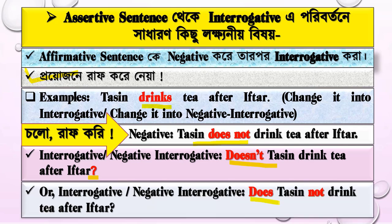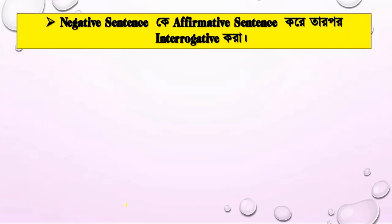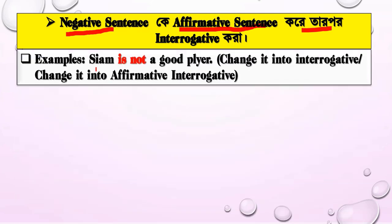So 'Does Tassin not drink tea?' is the interrogative form. When you have a negative sentence, you change it into an interrogative sentence. For example, 'The direction is not good' — this is a negative sentence. You may need to change it into an interrogative sentence.